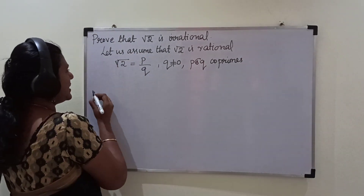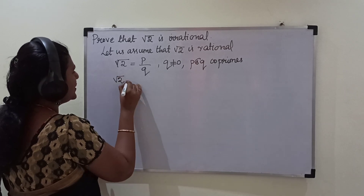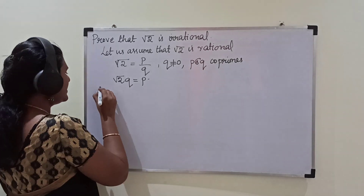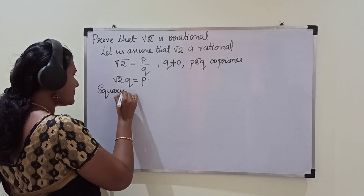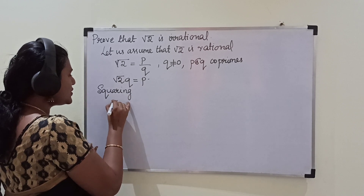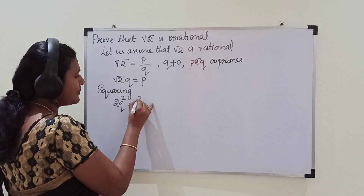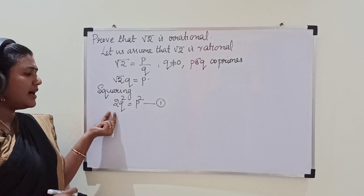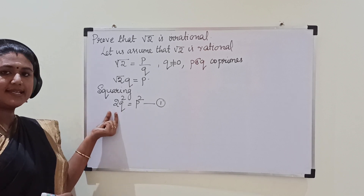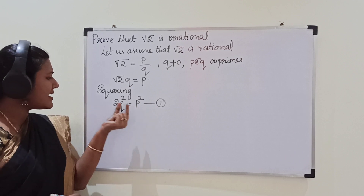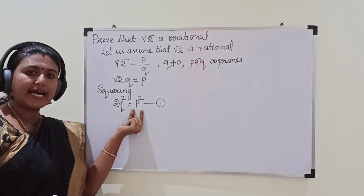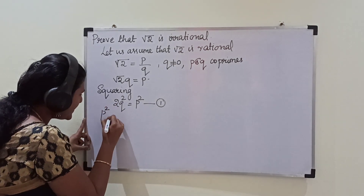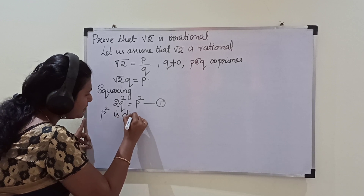Now we will cross multiply: √2·q = p. Squaring on both sides, we get 2q² = p². This is the first equation. From this equation it is very clear that p² is a multiple of 2, so p² is divisible by 2.